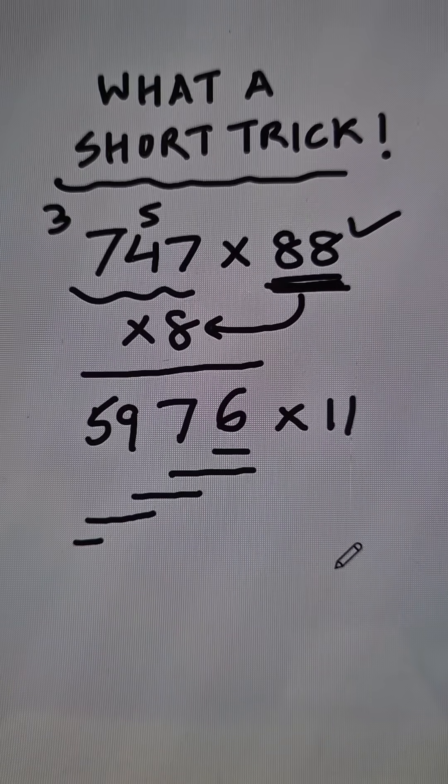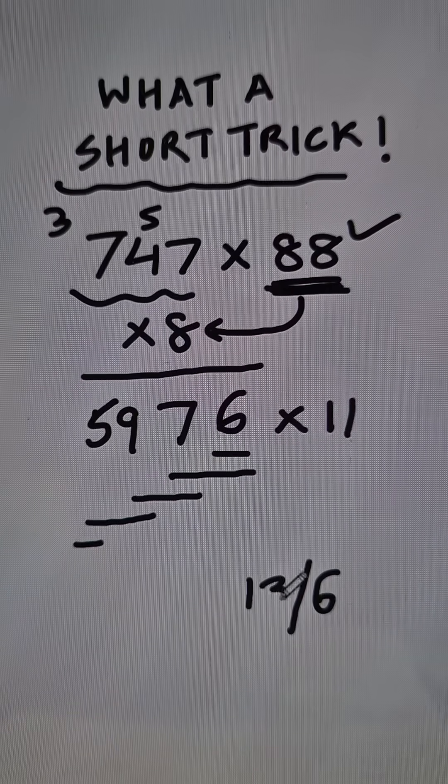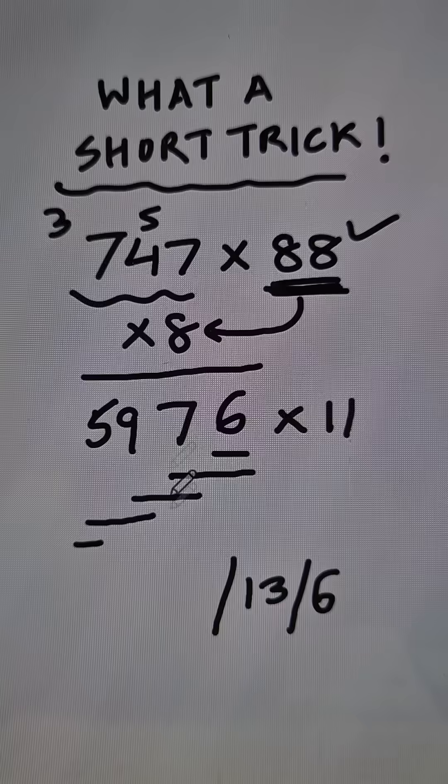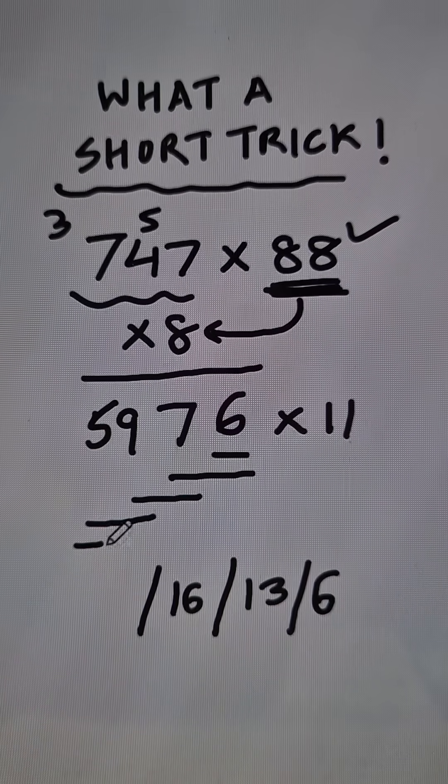So the 6 retains its place as it is, and then 7 plus 6 is 13. So I will put a slash and write 13 here, followed by the next doublet 9 plus 7 equals 16. So we write a 16 here, and then 5 plus 9 which is 14.